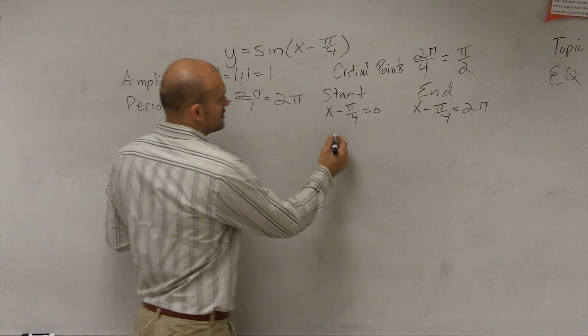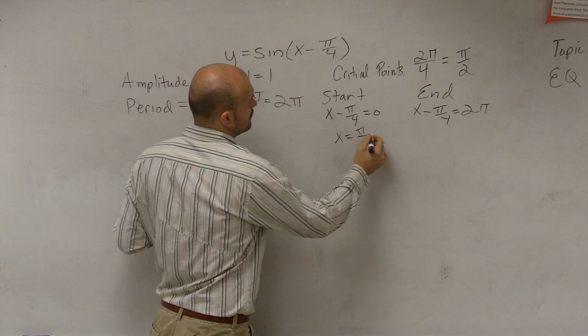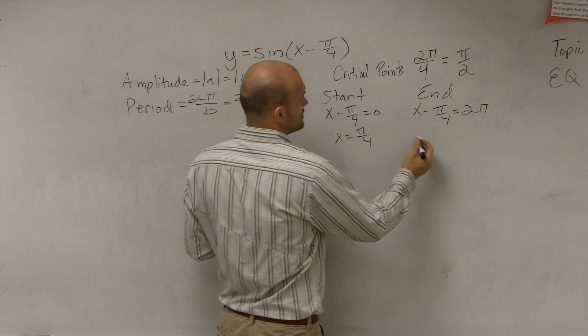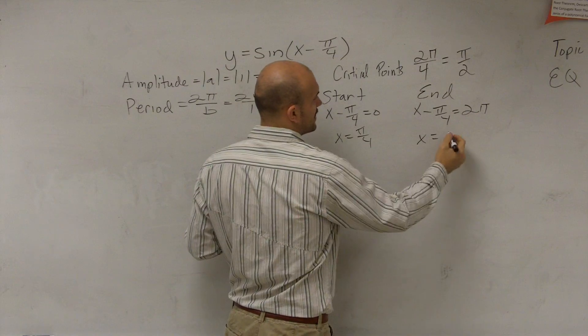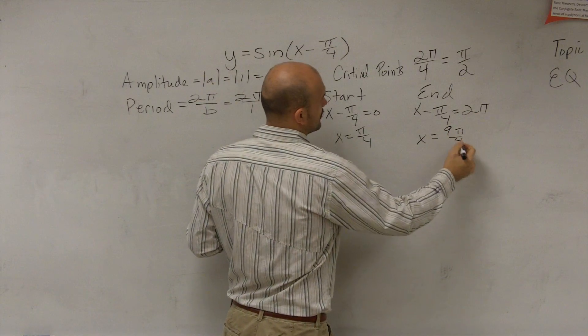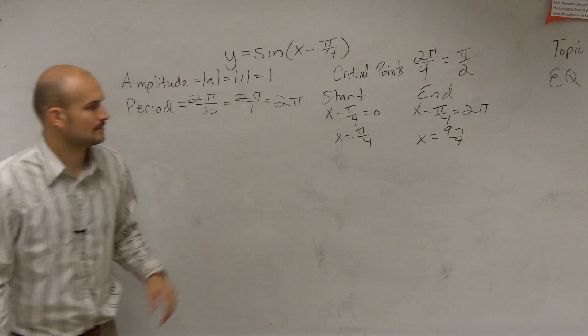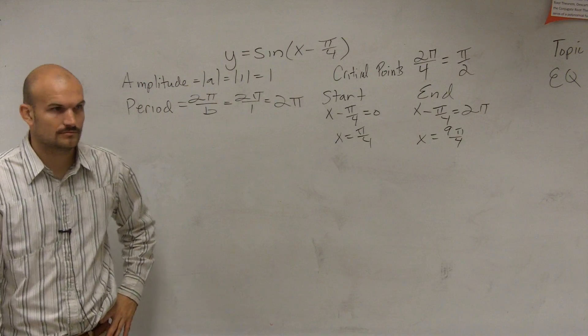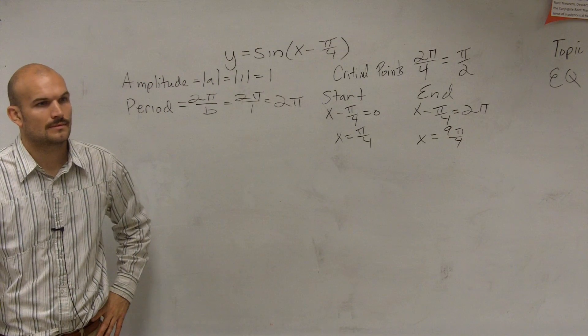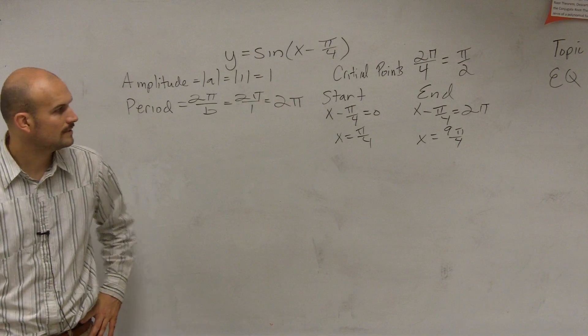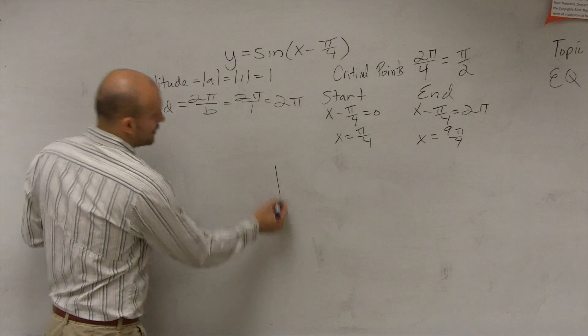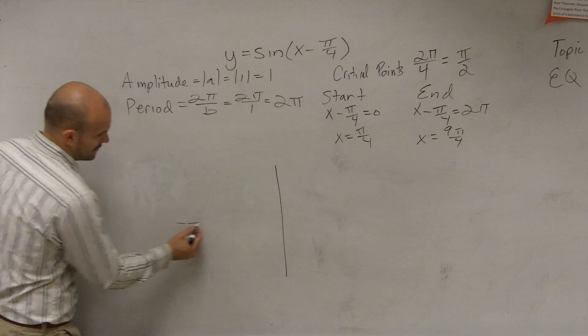So then, solving for x, we get π over 4. Then, solving for x here, we get 9π over 4. So now, what we want to do is let's graph it.